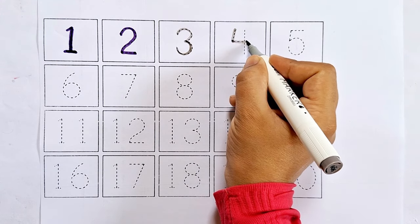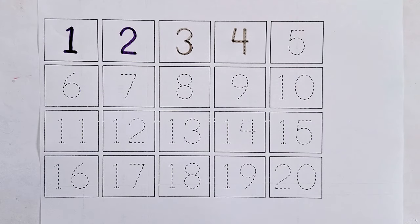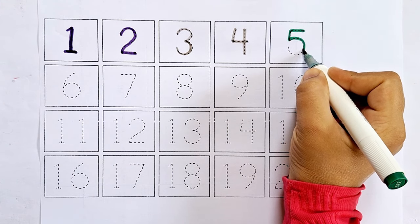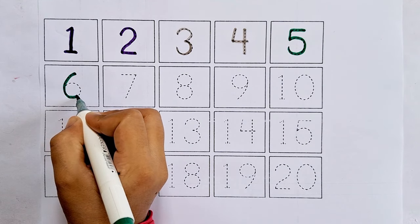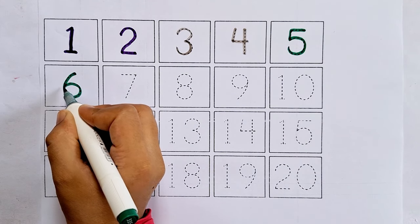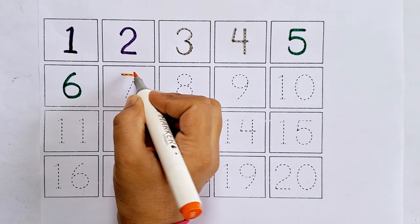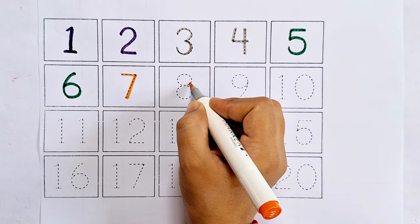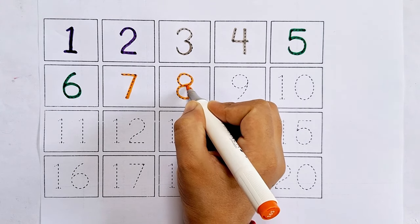Five. This is five. After four comes five. Six. This is six. After five comes six. Seven. This is seven. After six comes seven. Eight. This is eight. After seven comes eight.